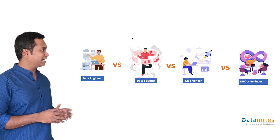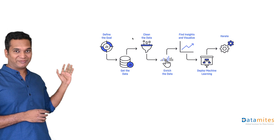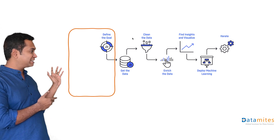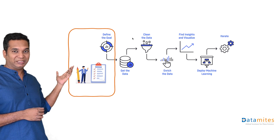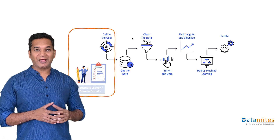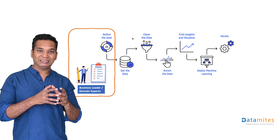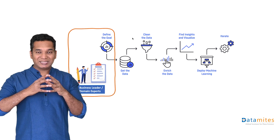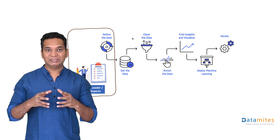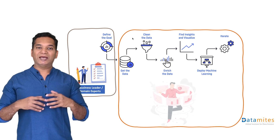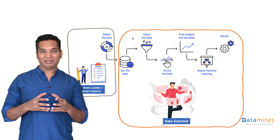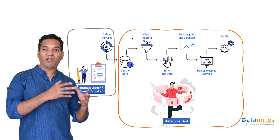If you look at the data science project life cycle, the business requirements come from the business leaders and domain experts. Then we get the data, process the data, clean the data, analyze the data, do machine learning modeling and predictive models, and then we deploy it.